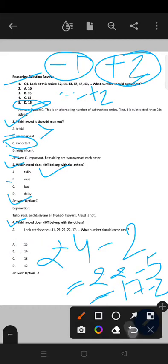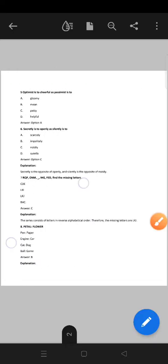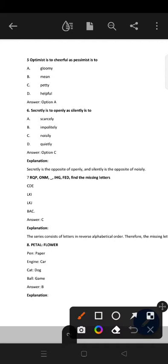Now I'm moving to the next slide. Optimist is cheerful as pessimist is to? So optimist means the person who has positive side of life, means cheerful. So pessimist, what will be the opposite of cheerful? Gloomy. The person who is sad, disappointed. So gloomy is the correct option. A option is correct.